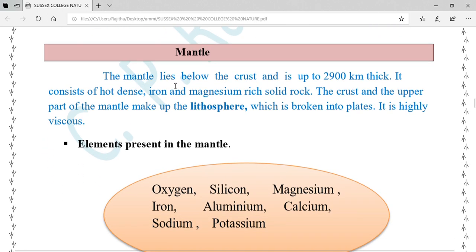Mantle: The mantle lies below the crust and is up to 2900 kilometers thick. It consists of hot dense iron and magnesium rich solid rock. The crust and the upper part of the mantle make up the lithosphere, which is broken into plates. It is highly viscous.